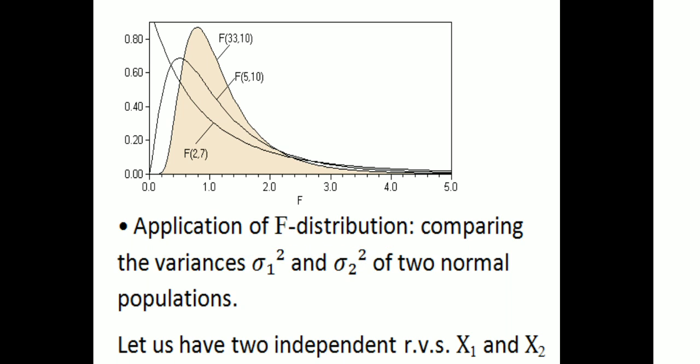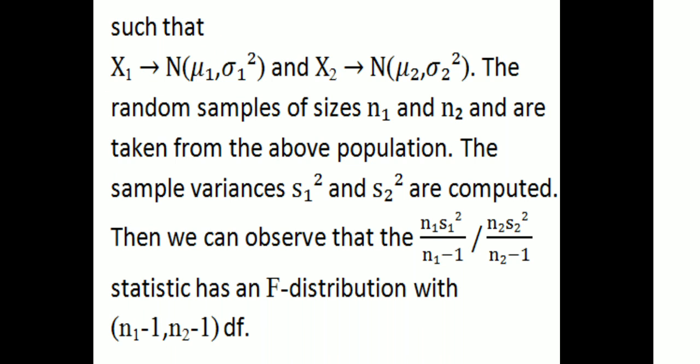Application of F-distribution: comparing variances σ₁² and σ₂² of two normal populations. Let x₁ ~ N(μ₁, σ₁²) and x₂ ~ N(μ₂, σ₂²) be two independent random variables. Random samples of sizes n₁ and n₂ give sample variances s₁² and s₂². The statistic (n₁s₁²/(n₁-1)) / (n₂s₂²/(n₂-1)) follows an F-distribution with n₁-1 and n₂-1 degrees of freedom.